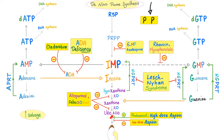Now, uric acid. How do we stimulate the secretion of uric acid in the urine? You can give a uricosuric drug such as probenecid and high-dose aspirin. How about inhibiting uric acid secretion into the urine? You can use low-dose aspirin. Many students get confused about which dose does what.